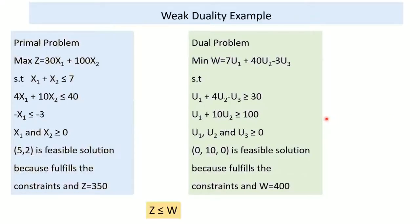Example of weak duality: using the primal and dual problems shown, if (5, 2) is a feasible solution for the primal, z = 350. In the dual, if (0, 10, 0) is a feasible solution, w = 400. Since z ≤ w (350 ≤ 400), this demonstrates weak duality between the two problems.